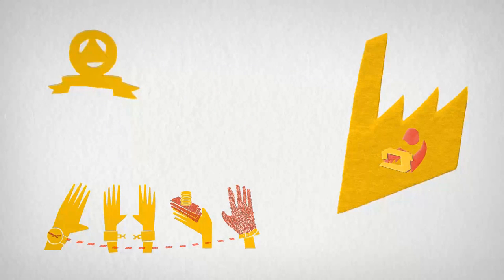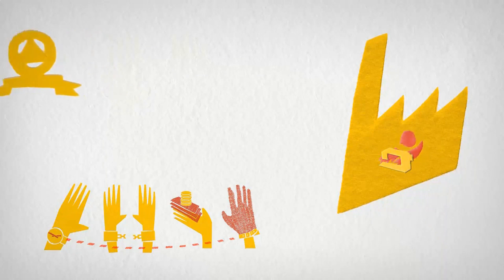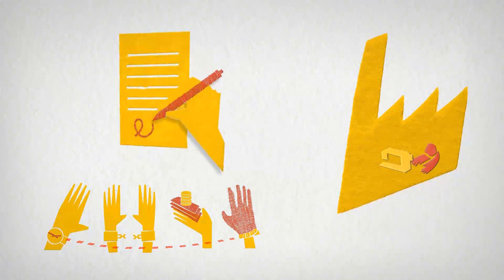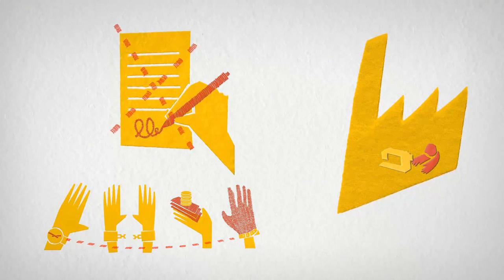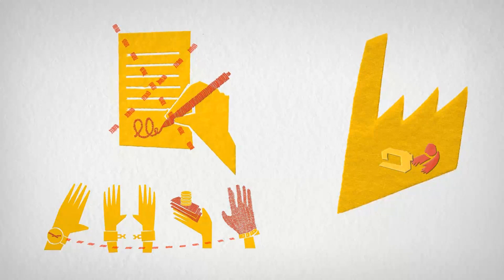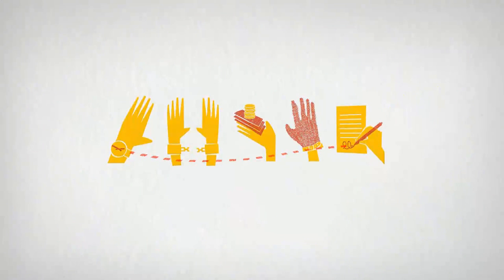Brands demand short delivery times. They change their orders at the last minute and pay unreasonably low prices, putting huge pressure on wages and working hours. Style changes and peak seasons mean factories are never sure when the next order will come. So, they overbook, another cause of overtime. Unpredictable orders also mean that workers are denied contracts or steady work. So, excessive overtime is connected to wages, contracts, and health and safety, as well as to the way brands do business.